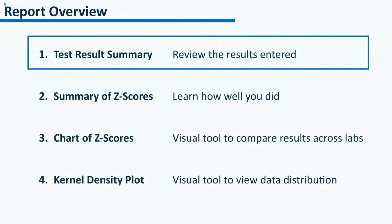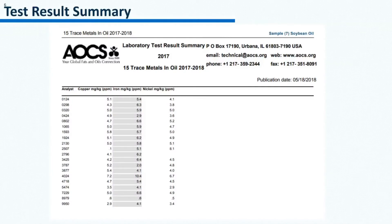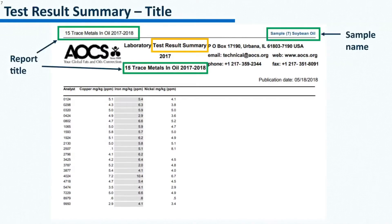The first part of the report is the test results summary. This is where all the submitted results are listed. Here is an example of the test results summary page. When reading a report, the first thing I recommend to do is to check the top left and the top right corners. At the top left corner, there is the report title. At the top right corner, there is the sample name. When you are participating in more than one series, or when there are more than one sample in a series, checking the top left and top right corners can keep you from reading the wrong report.